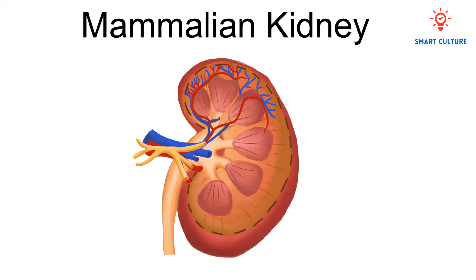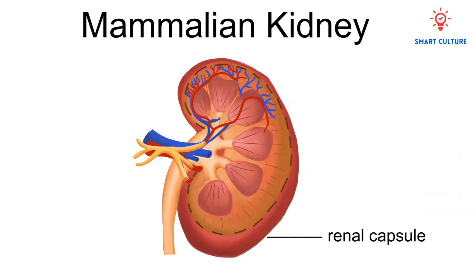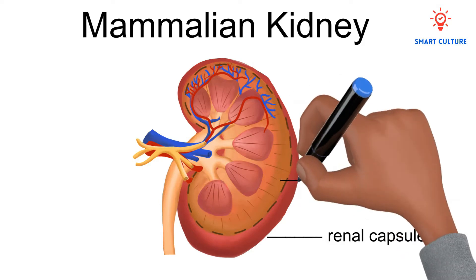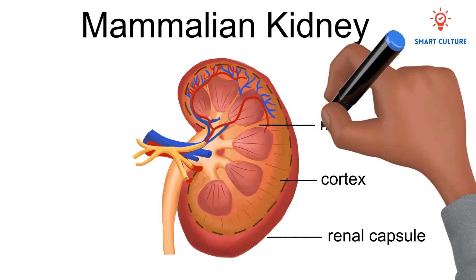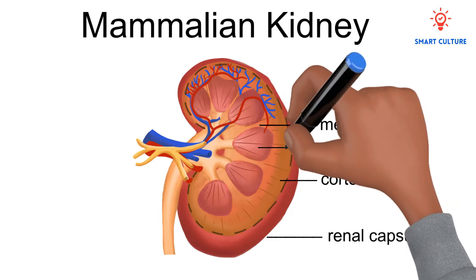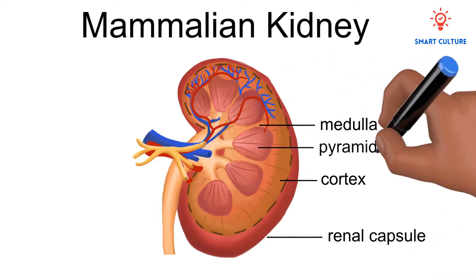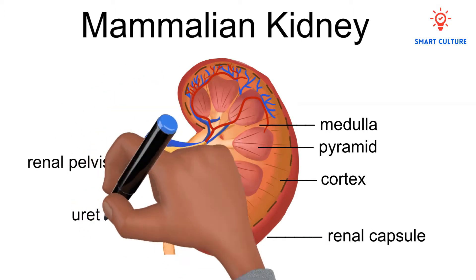Take a look at this biological diagram of the mammalian kidney. The renal capsule is a thin sheet that covers the outer surface of each kidney. The internal structure of the kidney consists of two main regions: the cortex and the medulla. The cortex is the outermost region and the medulla is a darker region of tissue below the cortex. We also have the renal pyramid, the renal pelvis, and the ureter.